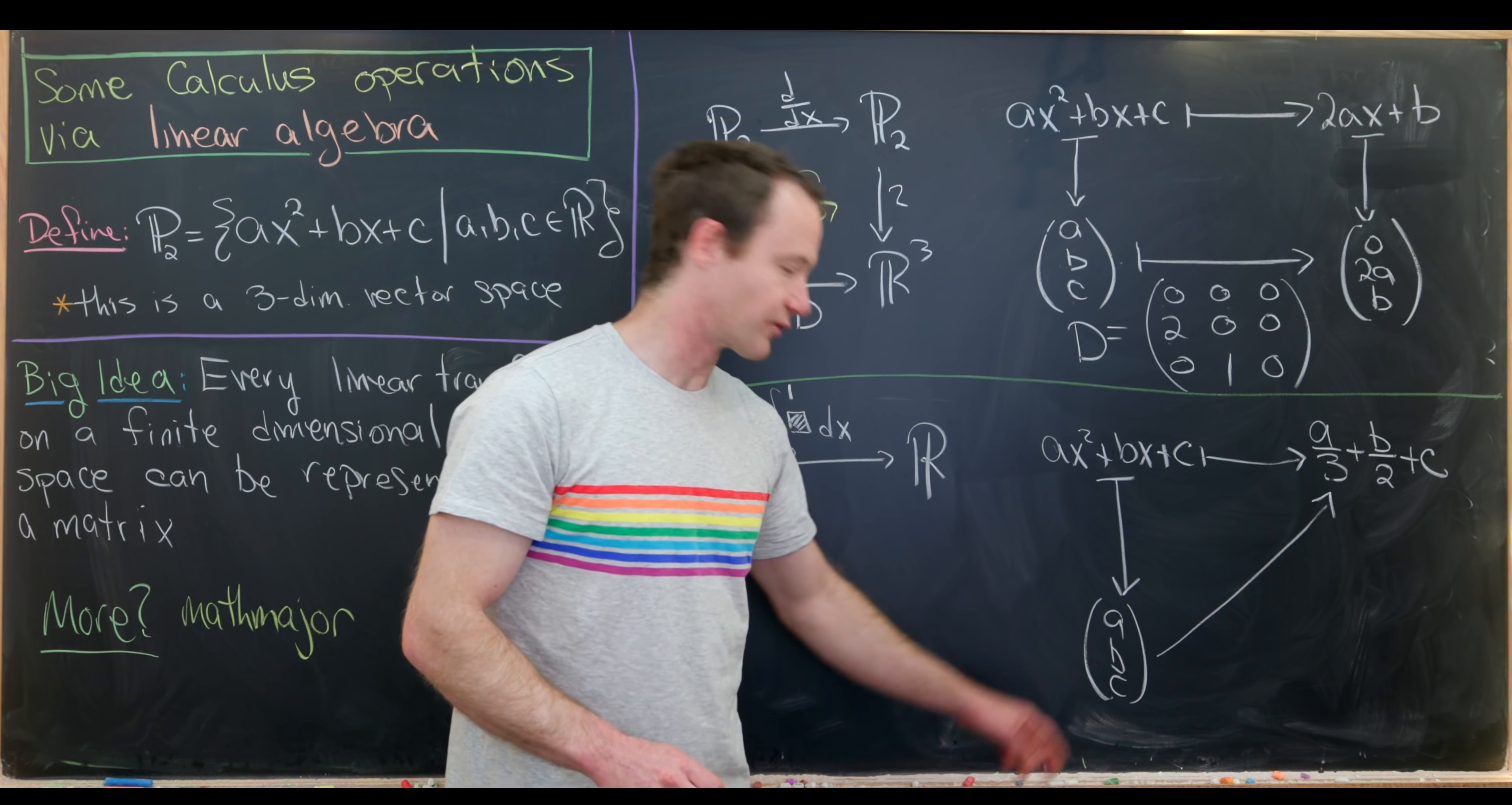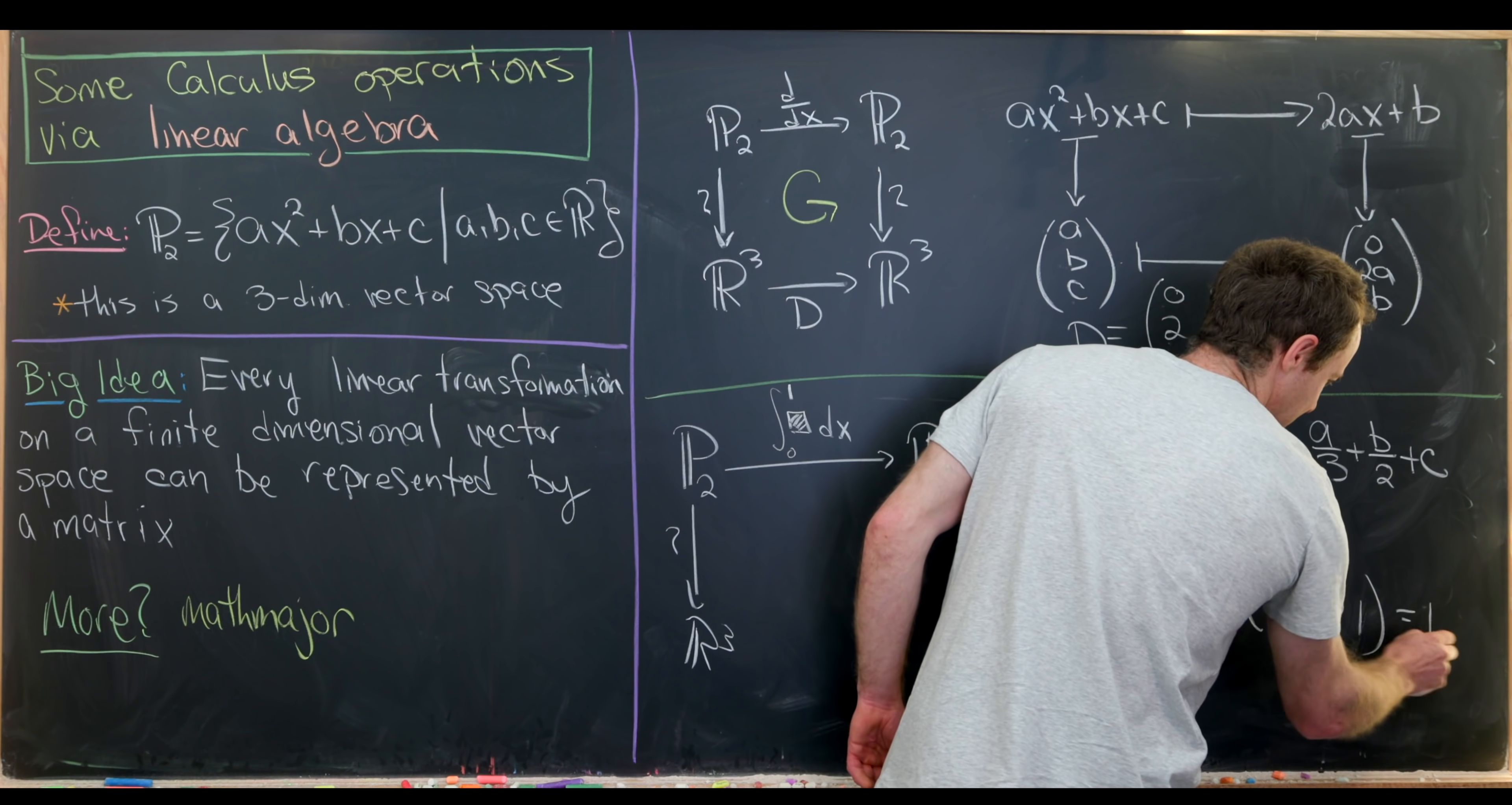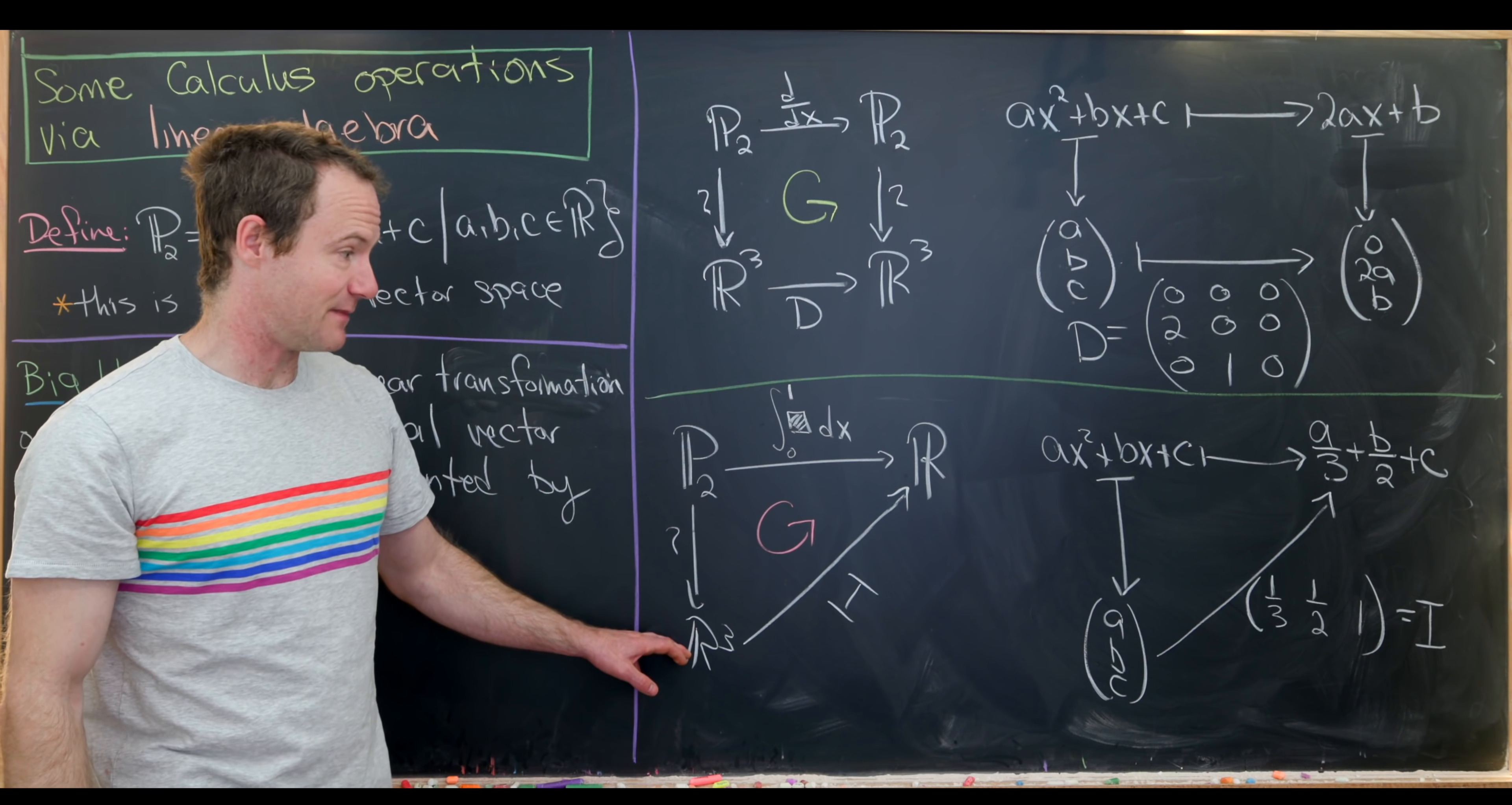We have a, let's see, it's a 3 by 1 matrix here. So in order to do that, we need to multiply by a 1 by 3 matrix. And that 1 by 3 matrix will be made up of 1 third, 1 half, 1. So it'll be that matrix right there. Then maybe we could give this a name. Maybe we could give this the name i for integral. And then that would complete this diagram right here. This would be i. And again, we've completed a commutative diagram that represented this linear operator on this vector space of polynomials as a matrix. In this case, it's just a matrix with a single row, but that's okay.